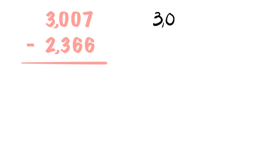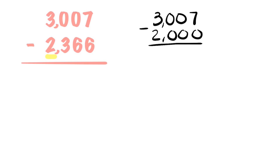Let's begin by writing only the number at the top, which is 3,007. We're going to only subtract the thousands place, which is a 2, which makes 2,000. That would be 7, 0, 0, and 1.